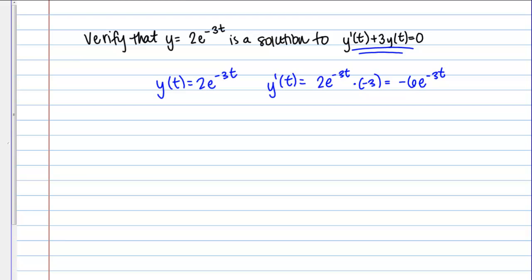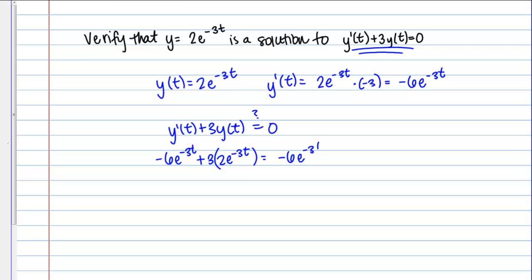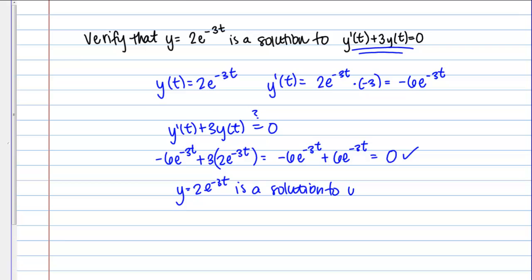Now we have y prime of t. The other part of this differential equation is y of t, but that's just our original function, so we're ready to plug in. Y prime of t plus 3y of t — I want to see if that equals 0. Y prime of t is negative 6e to the negative 3t, plus 3 times y of t, which is 2e to the negative 3t. So we get negative 6e to the negative 3t plus 6e to the negative 3t, which does equal 0.